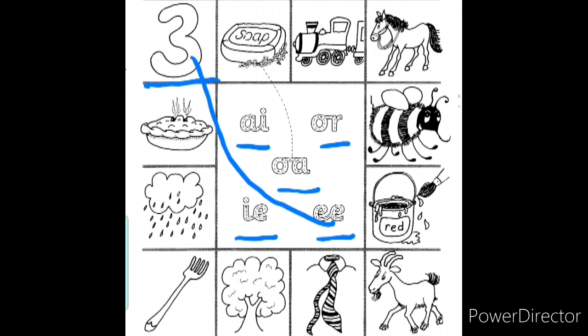Next, look at this picture children. What is this picture? It's a soap. What is the sound you hear in the word 'soap'? S-o-p. Do you hear a, r, o, i, or ee? Which sound do you have in that word? Yes — we have the 'o' sound. So let us match the soap picture to the 'o' sound.